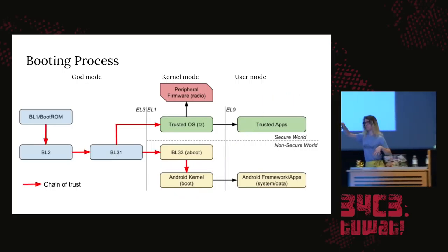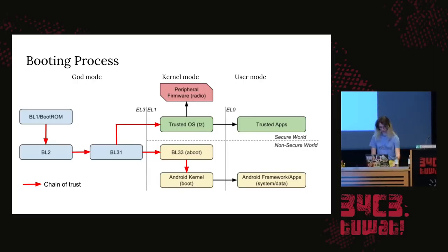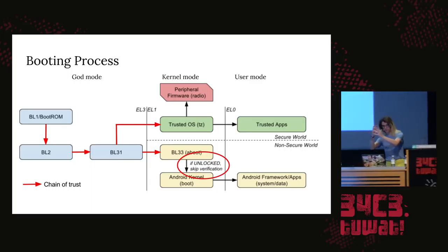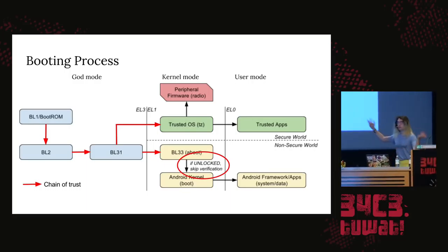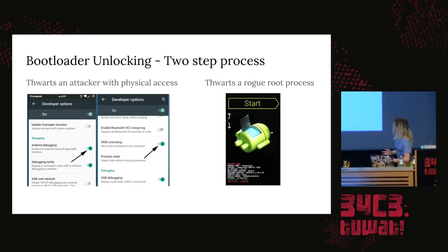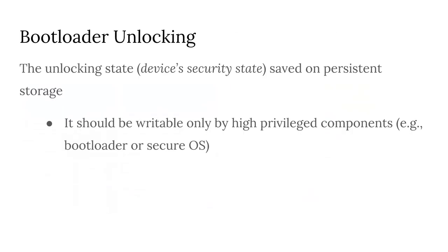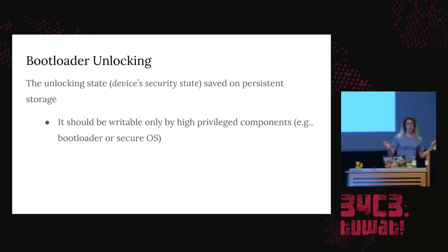This is the chain of trust. Each of those arrows represents cryptographic integrity, so the next stage only gets loaded if there's a valid signature indicating we really trust what's going on. That's the unlocking process: if you, the verified physical owner of the device, want to, you can disable that last bit and allow untrusted code to run as the kernel. The unlocking process is supposed to specifically verify two things: that you have physical access to the device, and that you actually own it — you know the PIN. When you go through that process, it sets specific flags on persistent storage saying this is an unlocked device now.